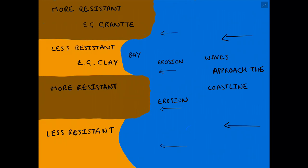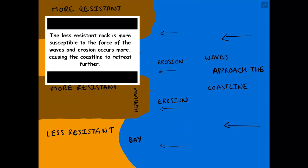Step three in the formation of a headland and bay is when we start to see that the less resistant rock is retreating further back inland because it is more susceptible to the force of the waves and erosion occurring more often. This is where we start to see our bays being created in the less resistant rock and our headlands in the more resistant rock.